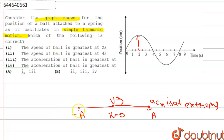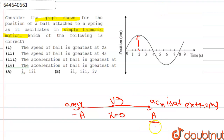So acceleration is maximum at the extreme points. At two seconds, the position of the ball is at its positive maximum — the positive extreme — so velocity is zero and acceleration is maximum there. Therefore, the first option stating that speed is greatest at two seconds is incorrect.